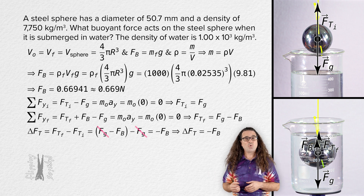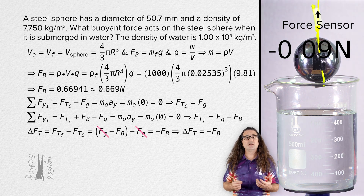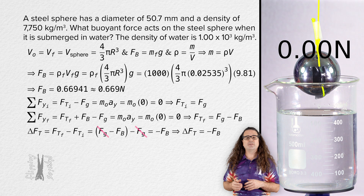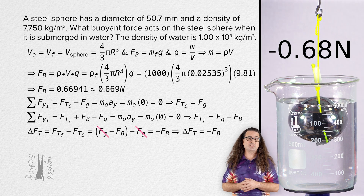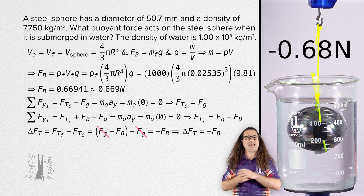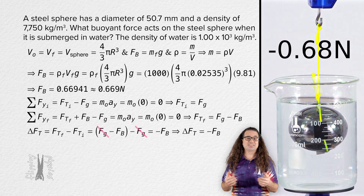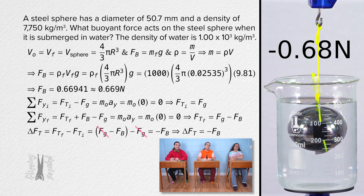That means when I zero the force sensor, which is attached to the string holding up the steel sphere, and then lower the steel sphere into the water, the force sensor should read negative 0.67 newtons. It's actually alternating between 0.67 and 0.68 newtons, so it's probably close to 0.67.